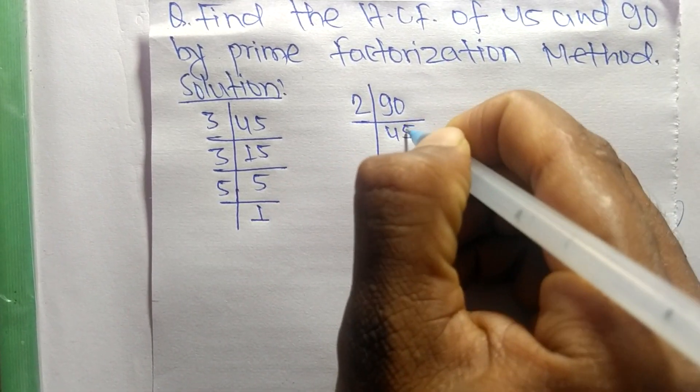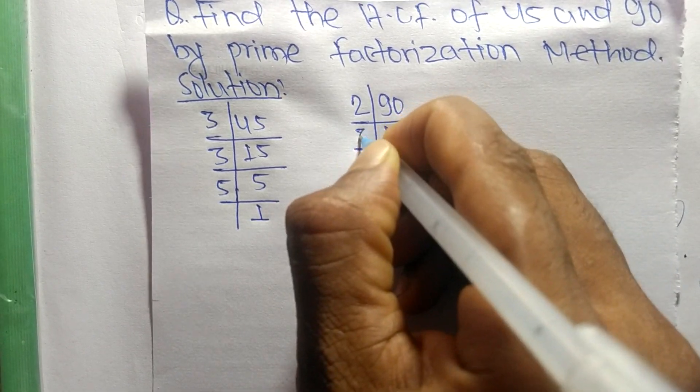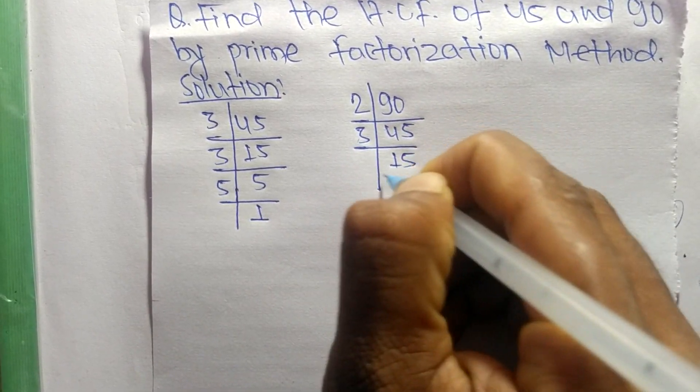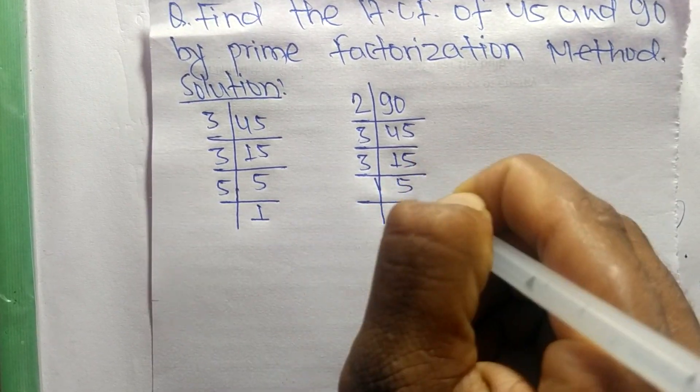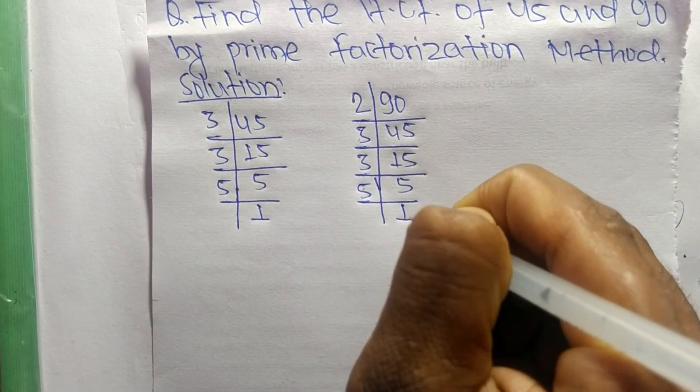2 times 45 equals 90, 3 times 15 equals 45, 3 times 5 equals 15, and 5 times 1 equals 5.